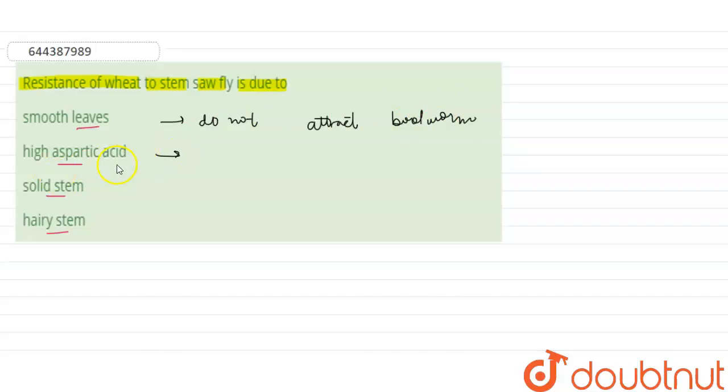Second option is high aspartic acid. They are resistant to maize stem borers.